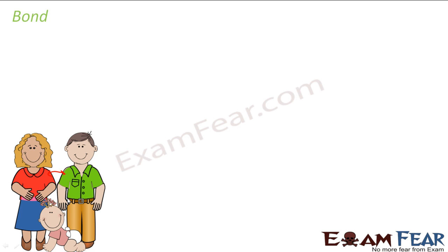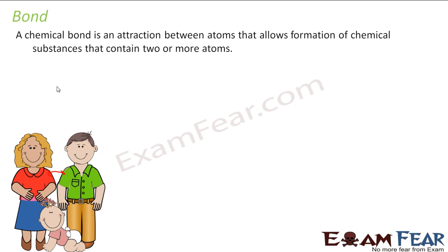Similarly, in an organic compound there's a bond between carbon and hydrogen, or carbon and nitrogen, and that binds them together. So there's a bond between various atoms. The definition of bond says it is nothing but attraction between atoms.